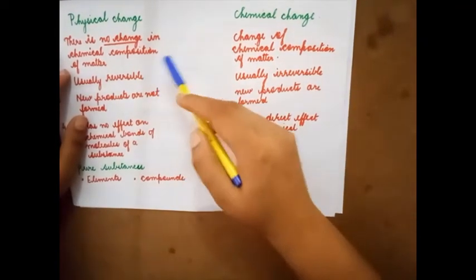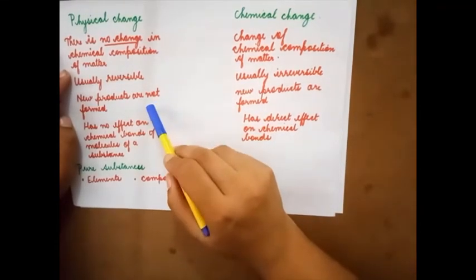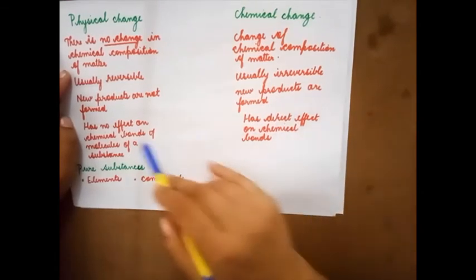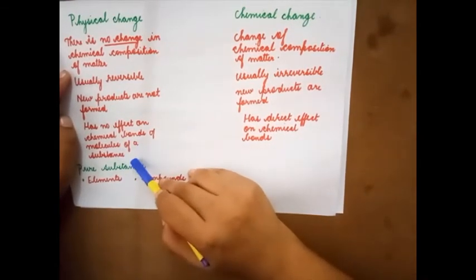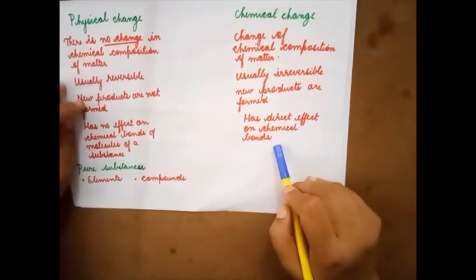Physical change is reversible. Chemical change is irreversible. In physical change, new products are not formed. In chemical change, new products are formed. Physical change has no effect on chemical bonds of molecules of a substance. Chemical change has direct effect on chemical bonds.